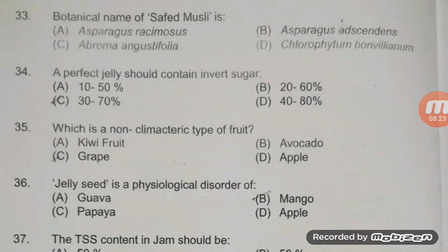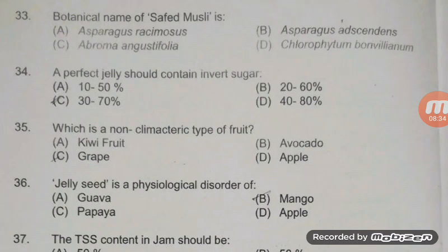A perfect jelly should contain invert sugar — the right answer is C — 30 to 70%. Which is a non-climacteric type of fruit? Grape is the right answer — option C. Jelly seed is a physiological disorder of — the right answer is B — mango. It generally means disintegration of pulp is a major symptom.